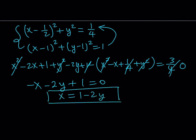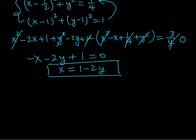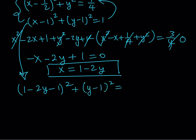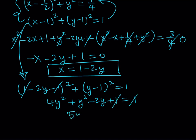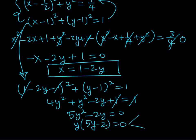Next, we substitute x = 1 − 2y into the second equation. That gives (1 − 2y − 1)² + (y − 1)² = 1, which simplifies to (−2y)² + (y − 1)² = 1, so 4y² + y² − 2y + 1 = 1. The ones cancel, giving 5y² − 2y = 0. Factoring out y: y(5y − 2) = 0. So y = 0 or y = 2/5. Obviously y = 0 gives the trivial solution.